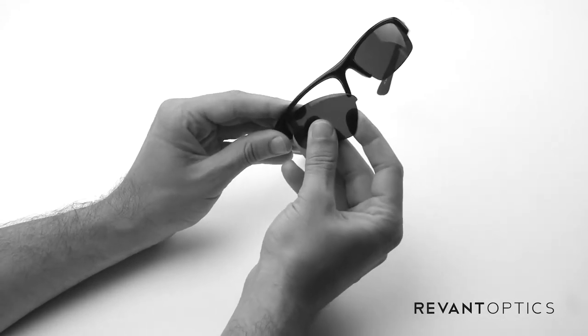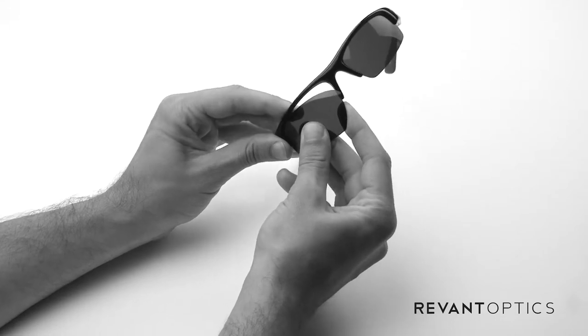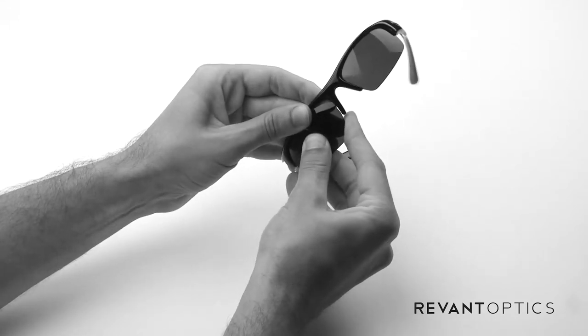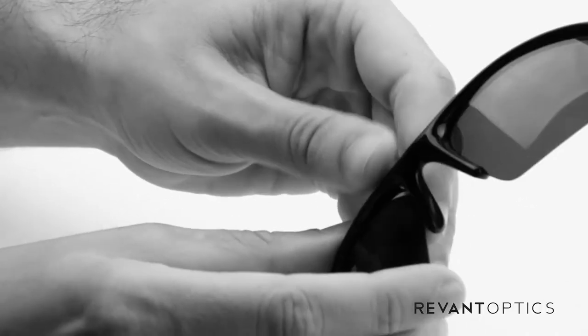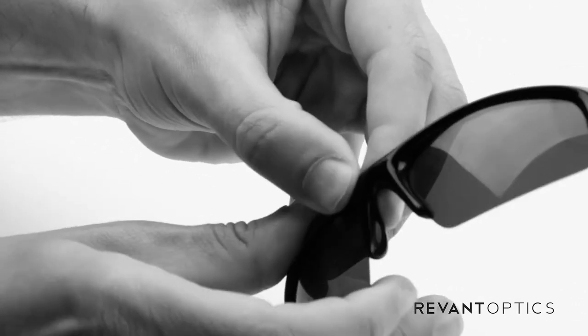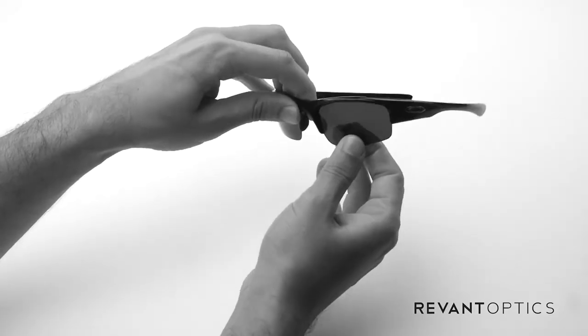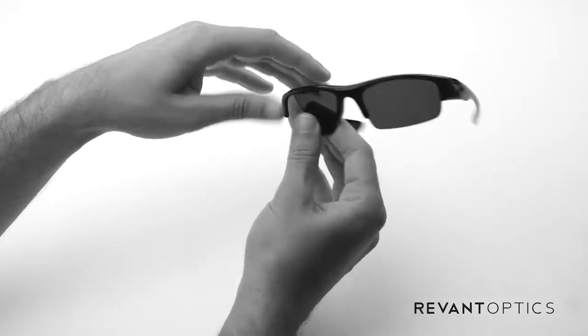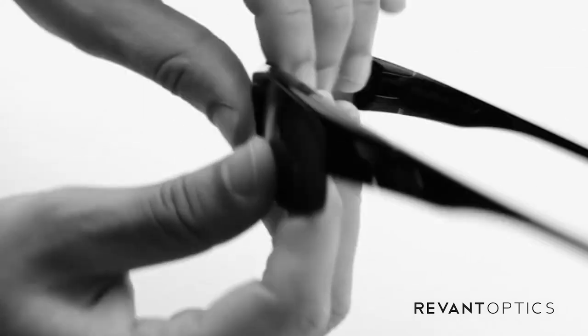We'll go ahead and do that on this side. Slide the outside edge in, and then line the inside edge up with the groove there. Push down on the top of the frame and up on the bottom of the lens. Pops right in. So it's fairly easy to remove these and install them.